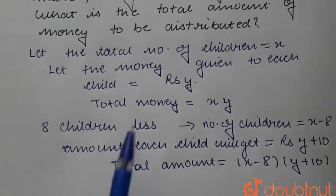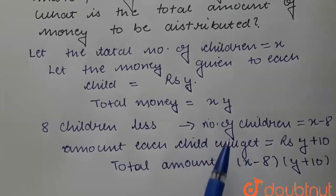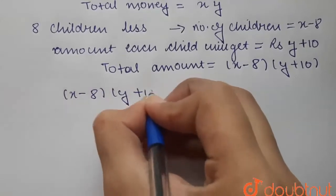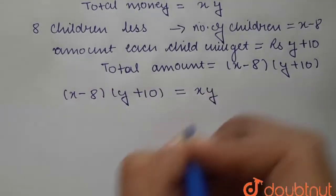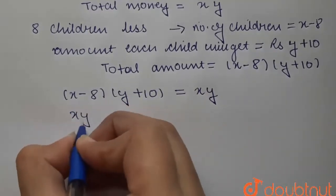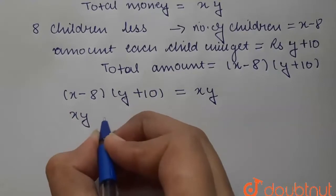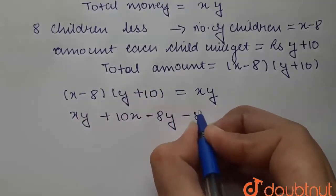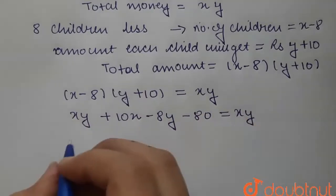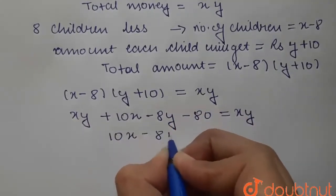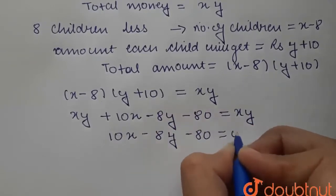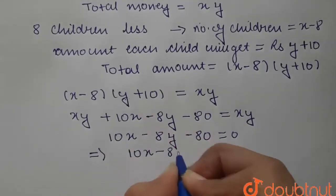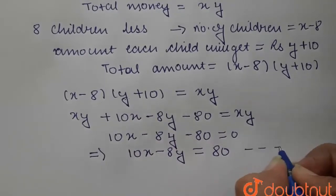Since both expressions represent the total amount, we equate them: x minus 8 into y plus 10 equals xy. Expanding: xy plus 10x minus 8y minus 80 equals xy. The xy terms cancel, leaving 10x minus 8y equals 80. This is Equation 1.